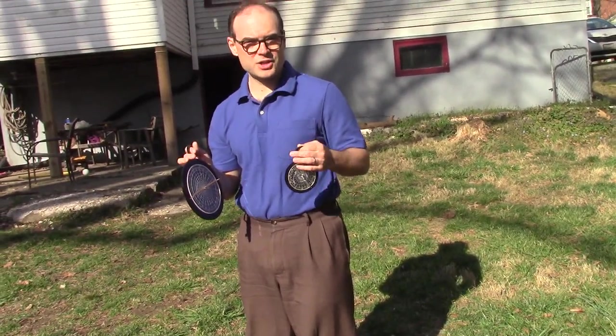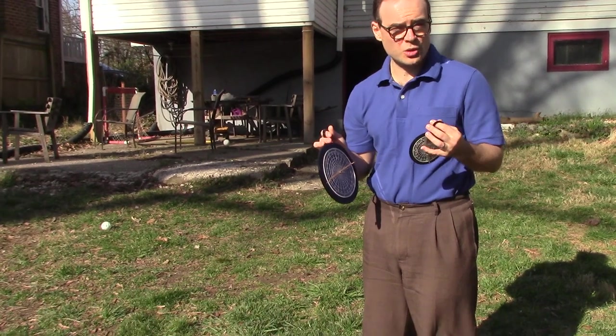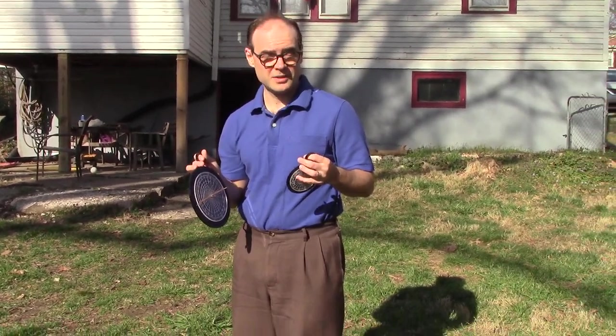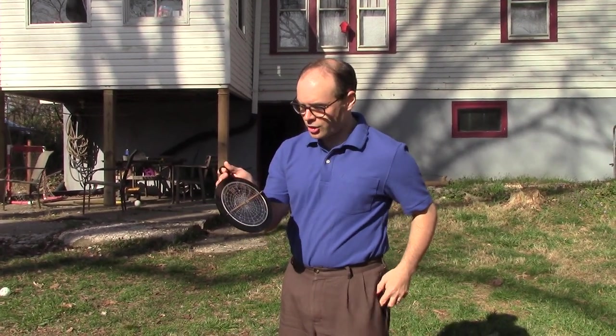I'm going to show you how to use the astrolabe during the daytime, so the stars aren't that important because there's only one star that's visible: the Sun. Of course, that star has the disadvantage that it moves around over the course of the year, and the astrolabe helps compensate for that. I'll demonstrate on the large astrolabe just because it's a little bit easier to see what's going on.